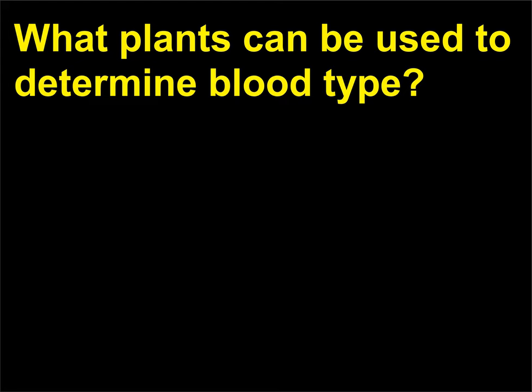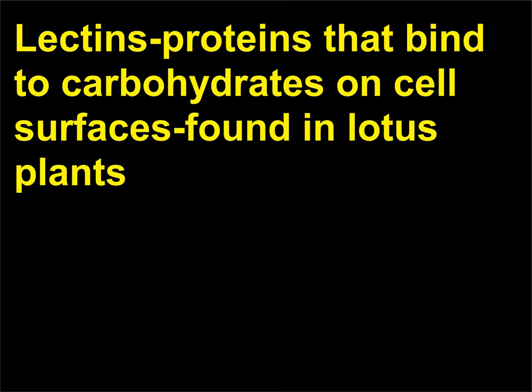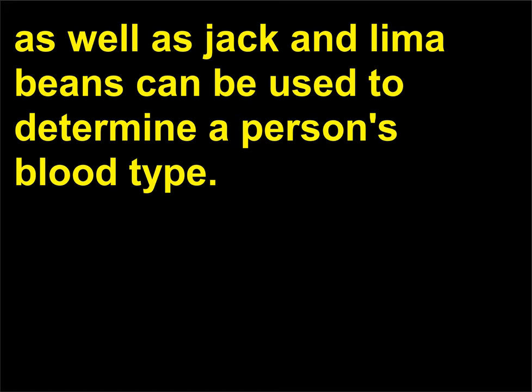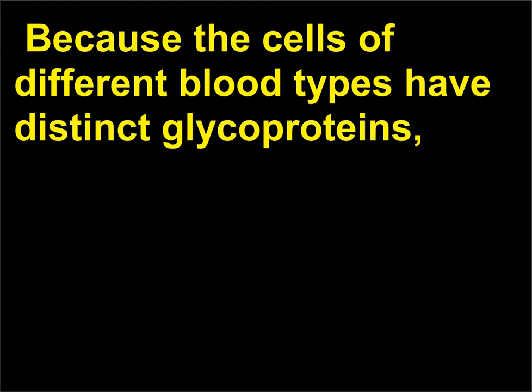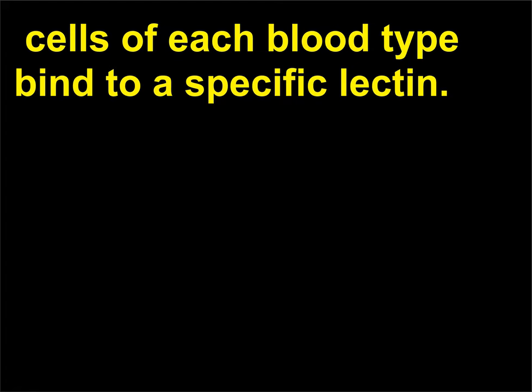What plants can be used to determine blood type? Lectins bind to glycoproteins present on the plasma membrane of red blood cells. Because the cells of different blood types have distinct glycoproteins, cells of each blood type bind to a specific lectin.